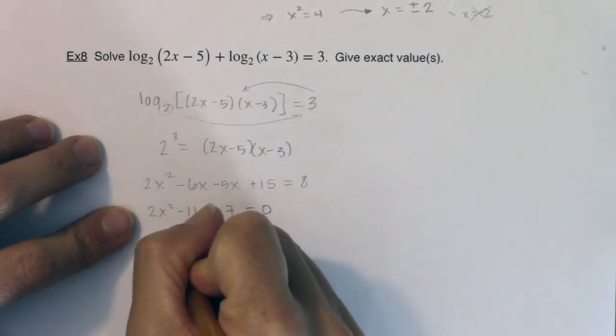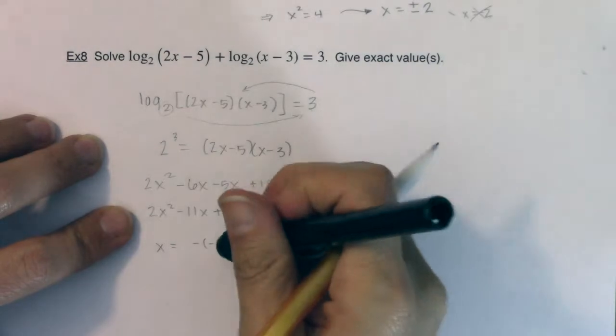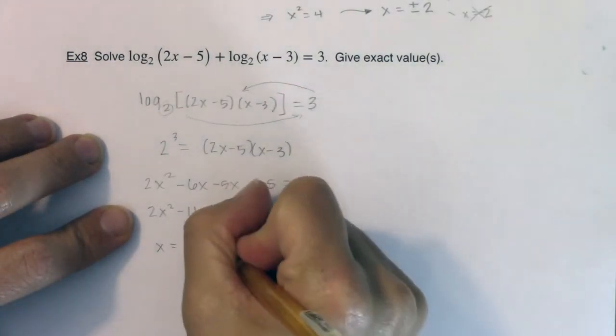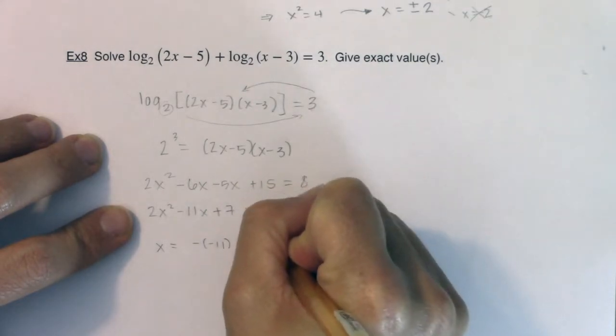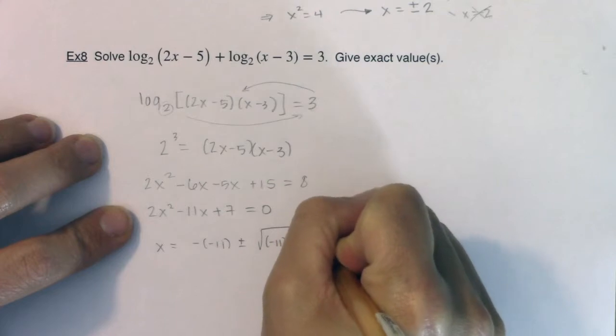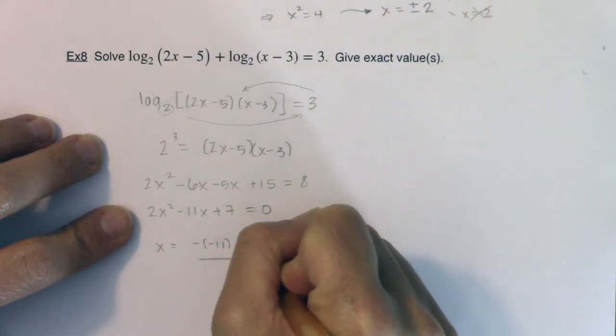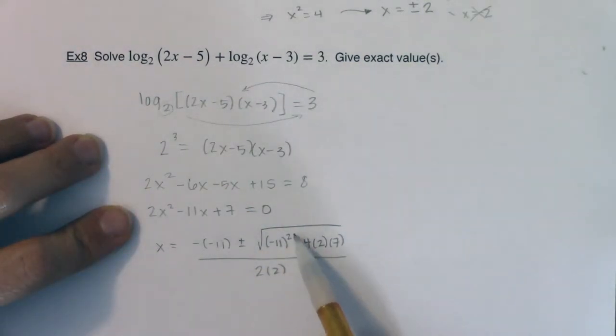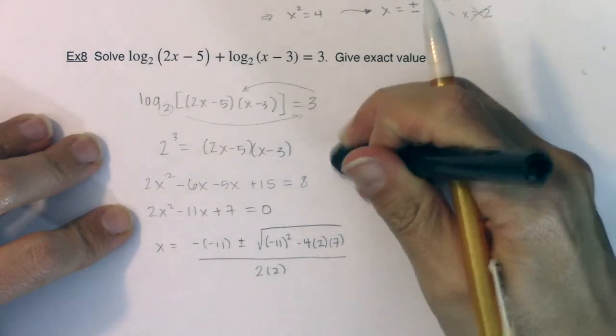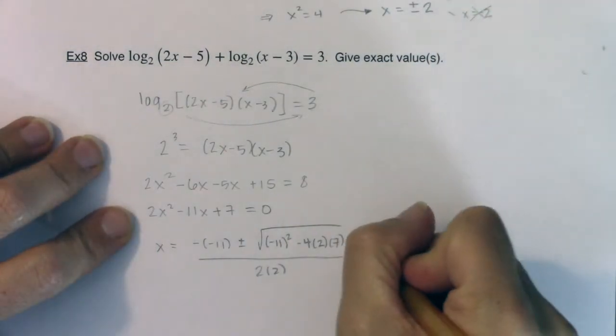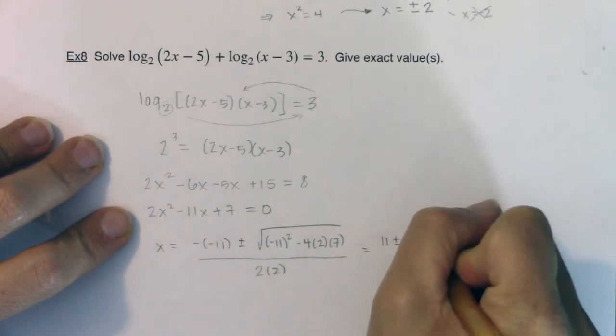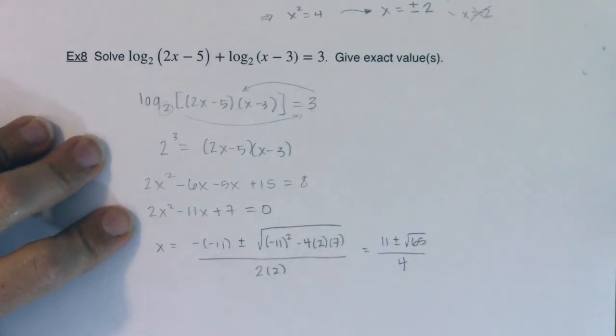If I want to use the quadratic formula, that would be negative b plus or minus the square root of b squared minus 4 times a times c, all over 2a. Let's simplify this a little bit. 11 squared is 121, and then 4 times 2 is 8, 8 times 7 is 56. So I'm looking at 121 minus 56—I know I could do that on my calculator, but I want to try and do this one at least for a little bit without my calculator. If I subtract that, I'm looking at 65. So we have 11 plus or minus the square root of 65 over 4.